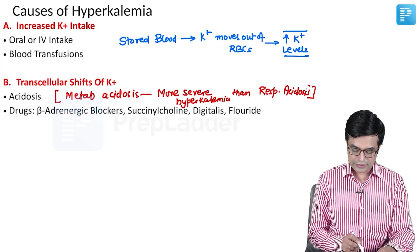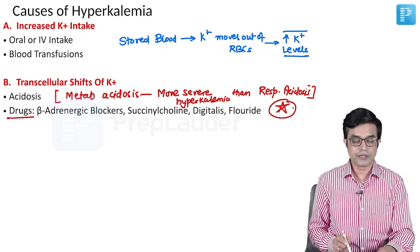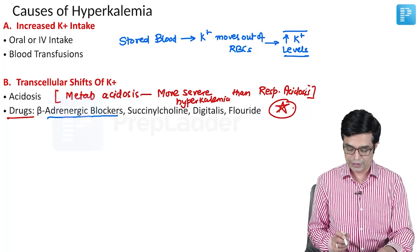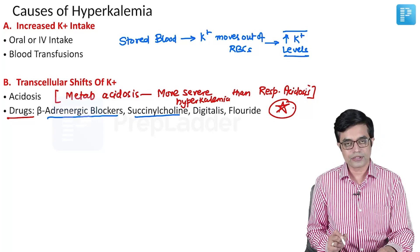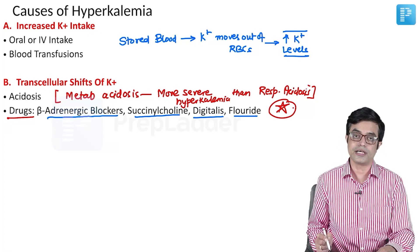Second are the drugs. These drugs are very important. MCQs on these drugs have already been asked. Beta blockers can cause hyperkalemia. Succinylcholine can cause hyperkalemia. Digitalis and fluoride intoxication can cause hyperkalemia.